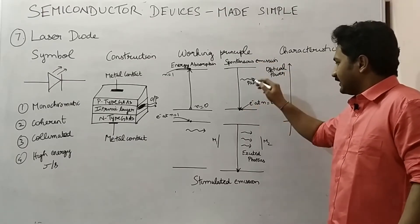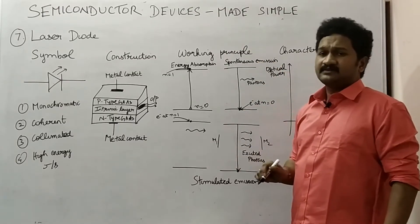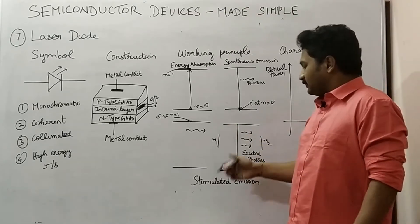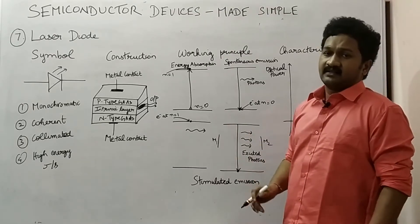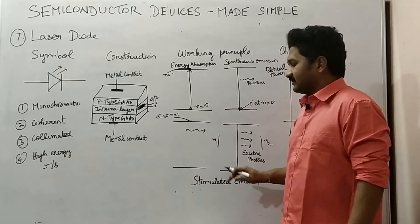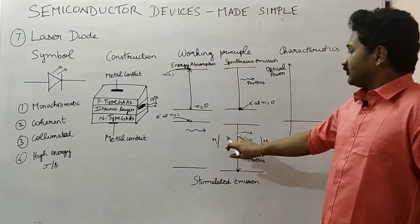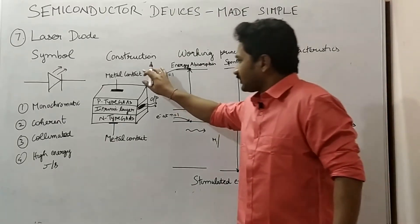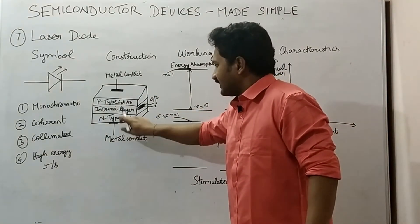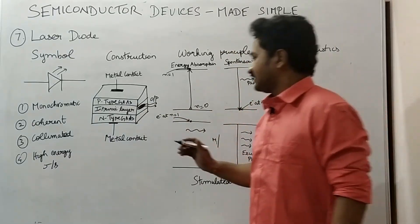After spontaneous emission, the electron moves to the lower energy state emitting some photons. Then comes the part of stimulated emission. This is one of the important concepts in the laser diode. In addition to the metal contact, p-type, n-type layers, and intrinsic layers, one more important part is the partial reflecting mirrors.